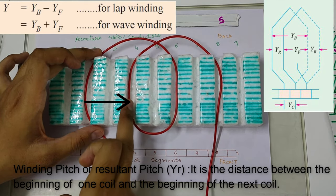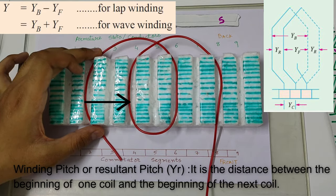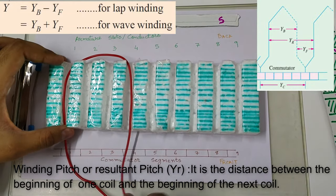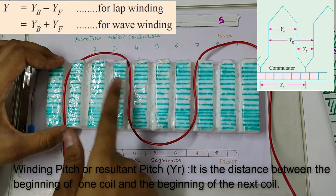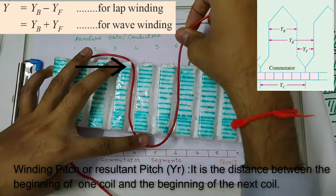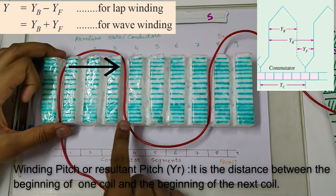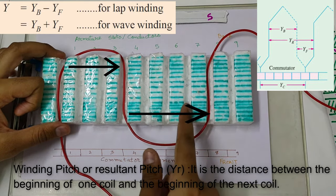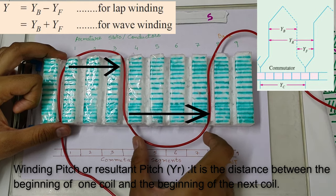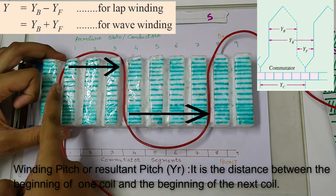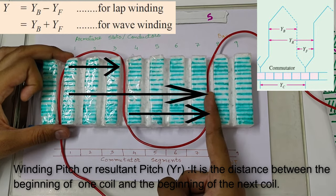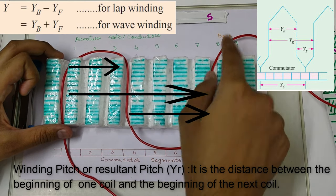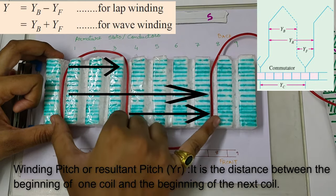We can also have a resultant pitch of 2 if the winding starts at a distance of 2 slots from the first winding. Now in case of a wave winding, the back pitch — for example, starting from 1 and going to 4 — so 1, 2 and 3. So 3 is the back pitch. For the front pitch, the distance between the end of the first turn and the start of the second coil is 1, 2, 3 and 4. So front pitch is 4 and back pitch is 3. The resultant pitch — distance between the starting of the first coil and starting of the second coil — is 1, 2, 3, 4, 5, 6 and 7. So the resultant pitch is 7 in case of a wave winding, or we can calculate it as 8 minus 1.